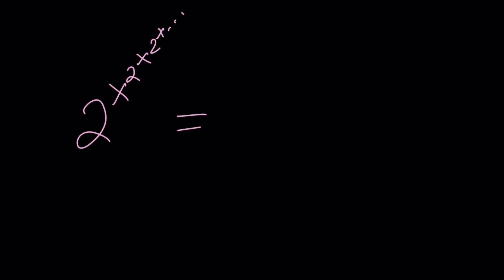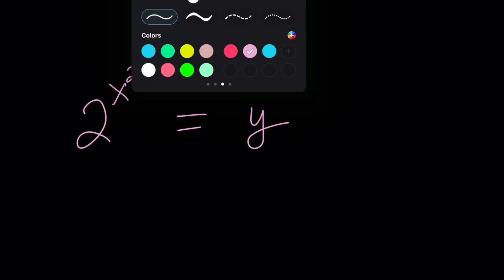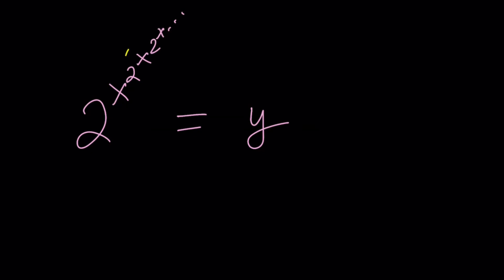Instead of setting it equal to 4, I set it equal to y. So any y value, because 4 could be replaced with anything, right? And then the repeating section here is going to be like this. It's going to start with 2 at the base. So this is the same as y.